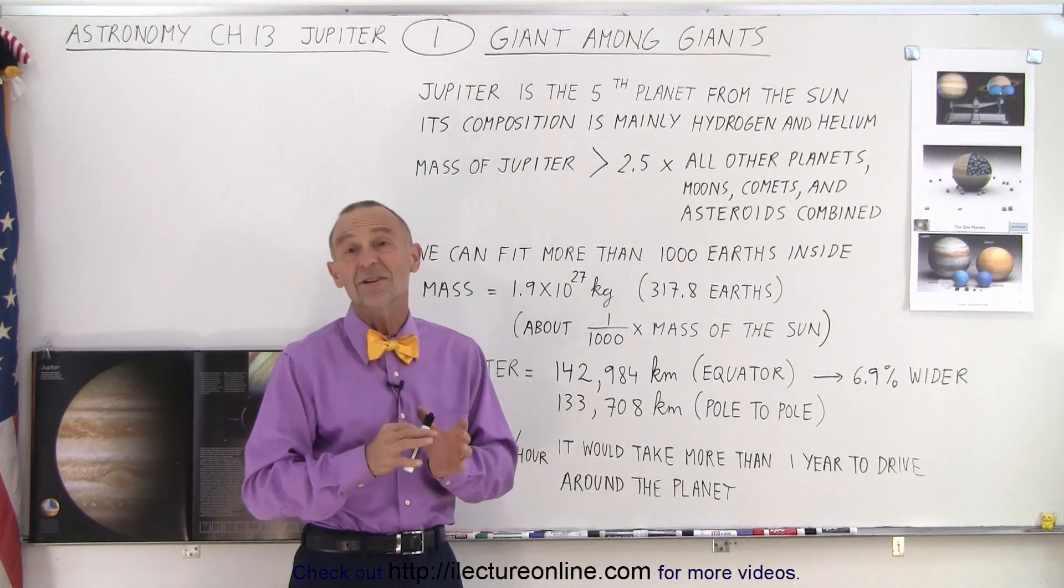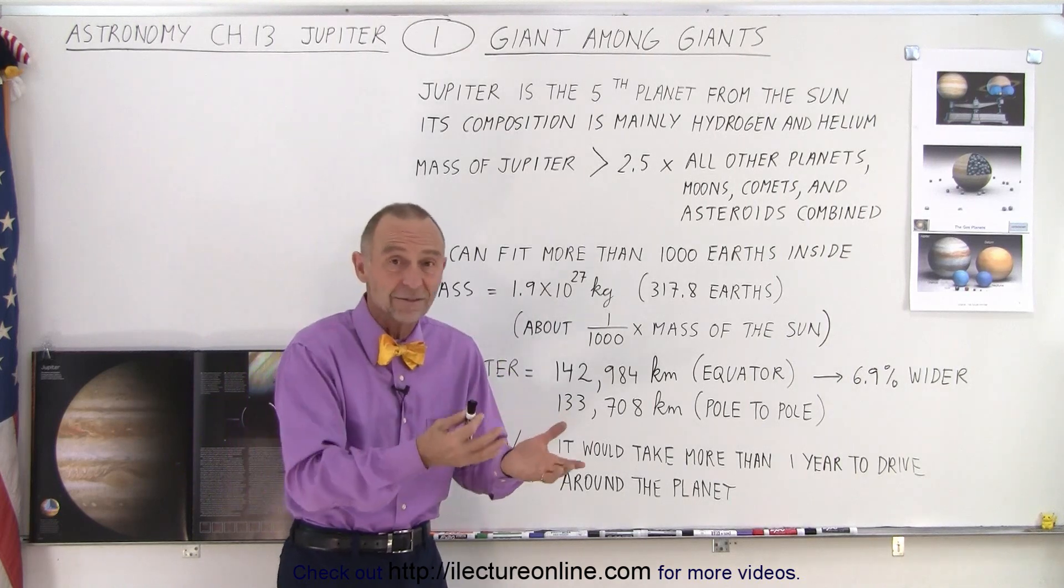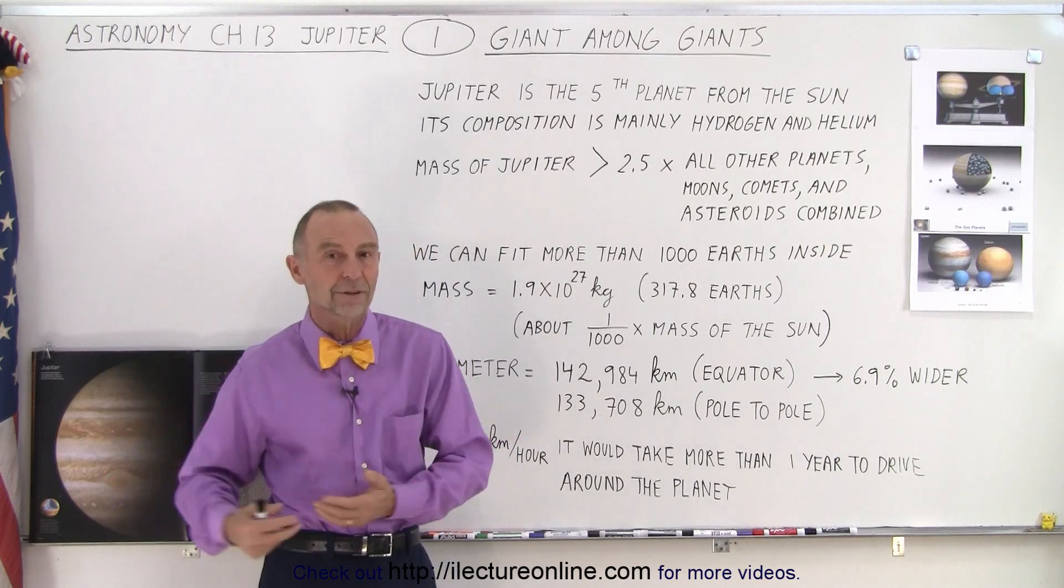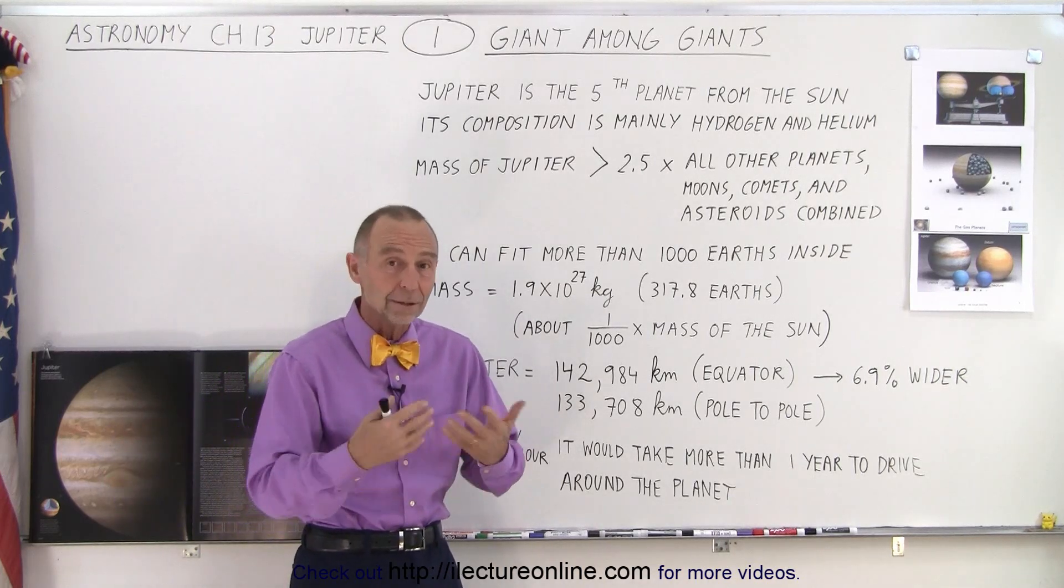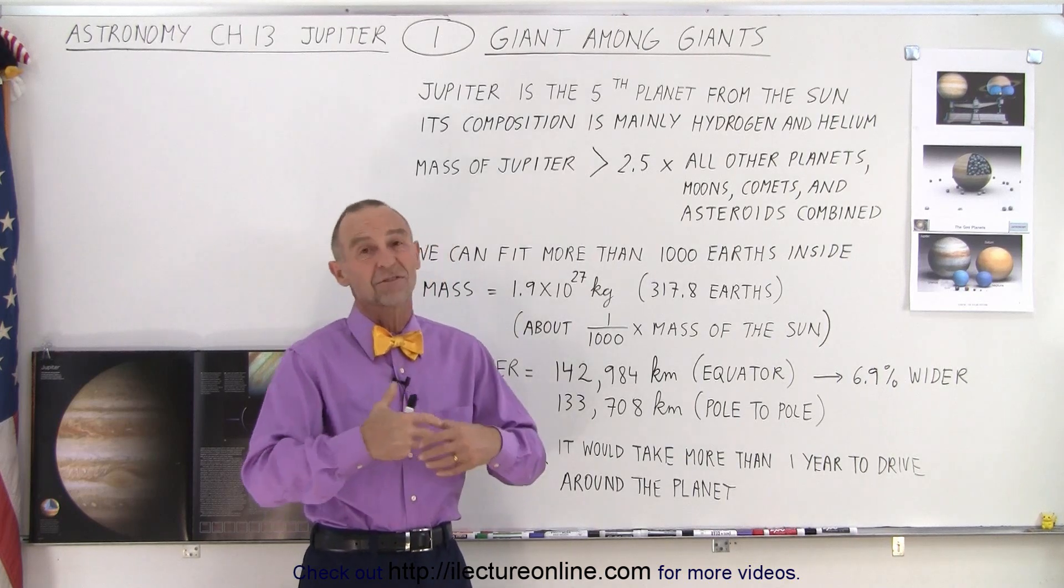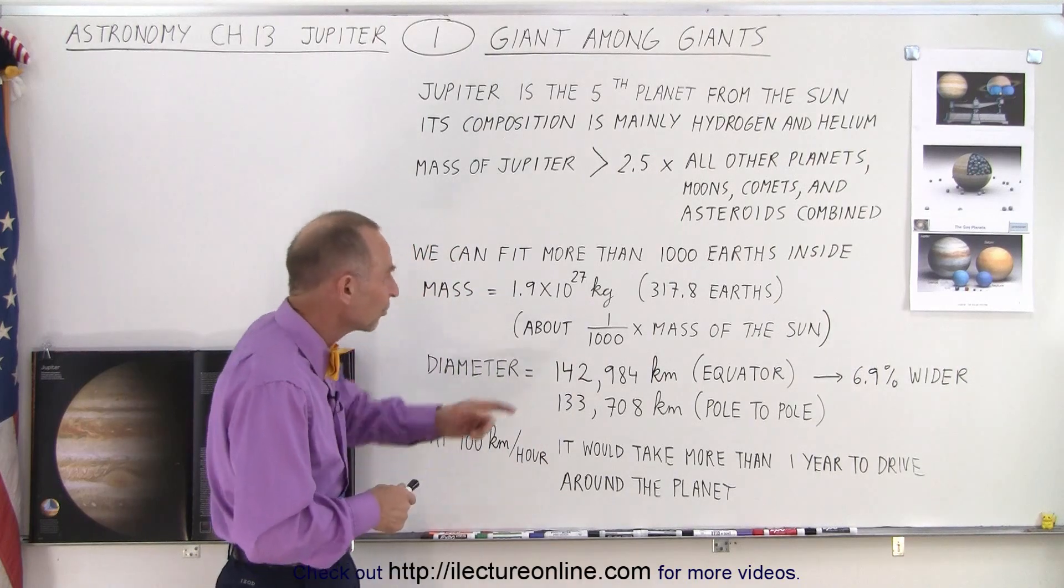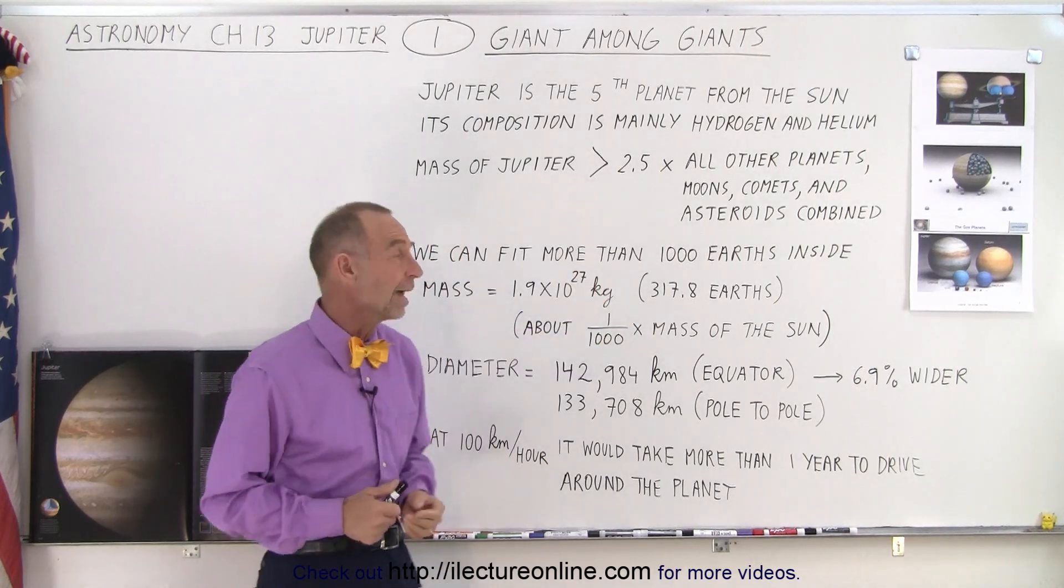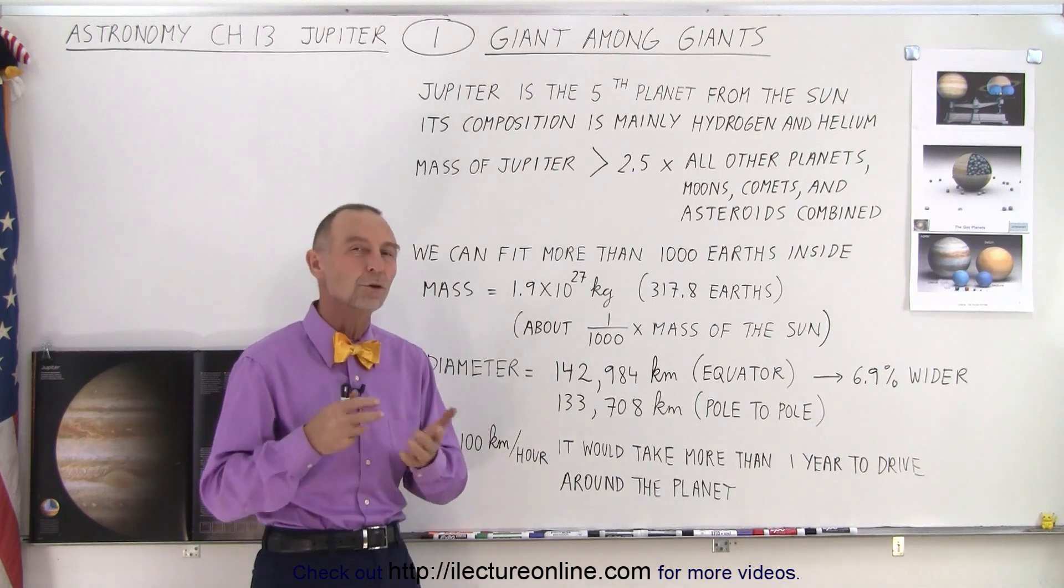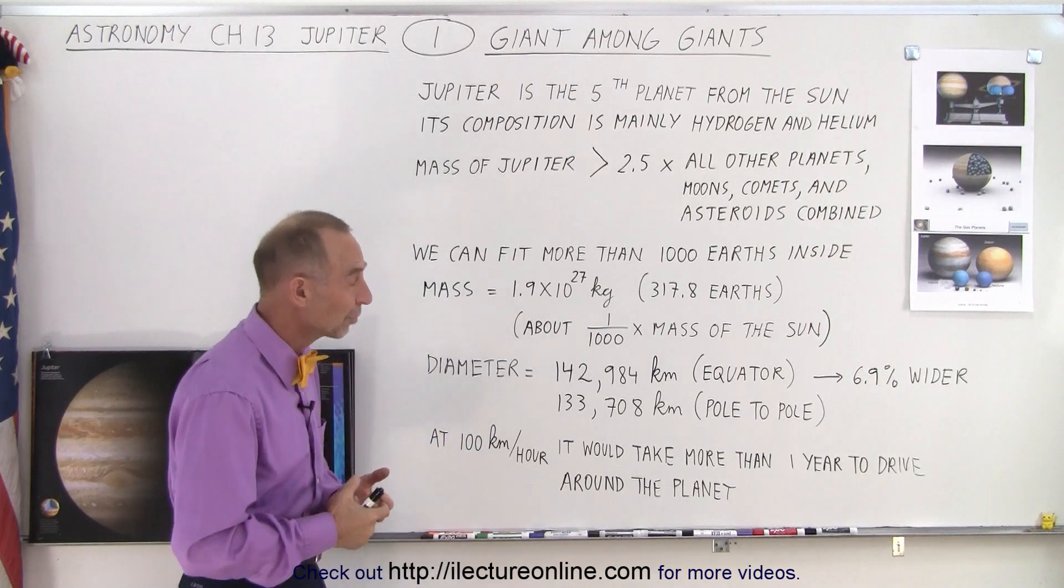Now the density isn't as high as the density of the Earth, because essentially it's made out of gas, and gases aren't as heavy or as massive as the materials that the Earth is made of, which is mostly metal and rock. So since it's not as dense, the mass is not 1,000 times the mass of the Earth, it's about 320 times, 317.8 to be exact. And so the mass comes out to about 1.9 times 10 to the 27 kilogram, over 300 times the mass of the Earth.